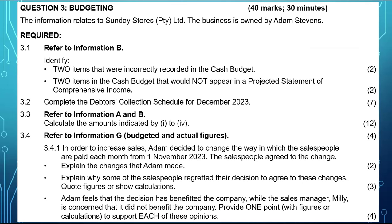We also need to identify two items that are in the cash budget but will not appear in a projected statement of comprehensive income. You need to understand that any item will go into the cash budget as long as it results in a cash inflow or cash outflow. However, when it comes to the projected income statement, only income and expenses will go there — whether that income was received or that expense was paid does not matter.